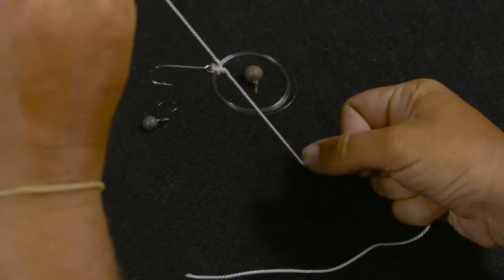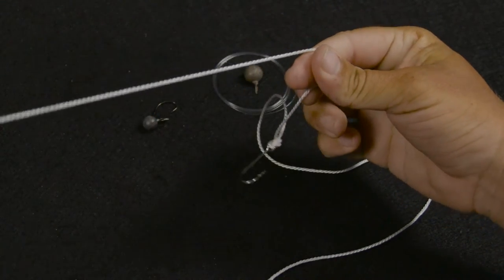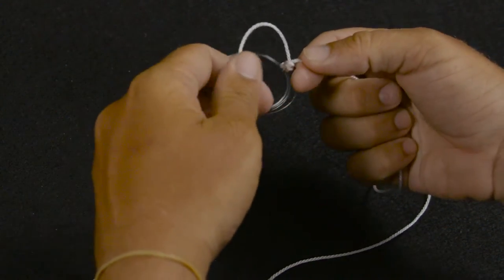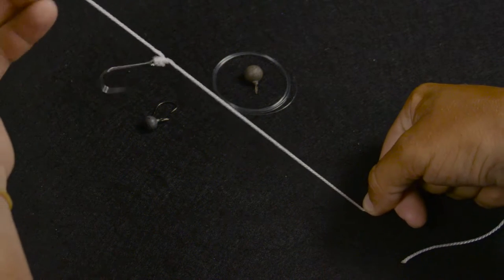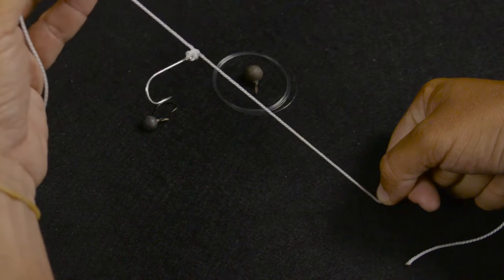So I have my main line here and this is going to be my line that I tie my weight to. But as you can see, already when I tied that, there's really no way to determine which way that hook's going to be pointing.